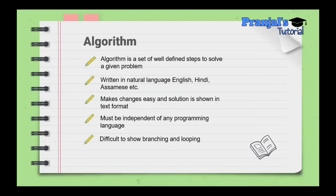One limitation is that it is difficult to represent branching and looping in an algorithm. Branching statements like if-else and switch, and looping statements like for, while, and do-while, are quite difficult to express clearly in an algorithm.